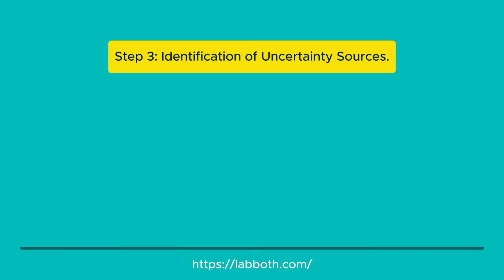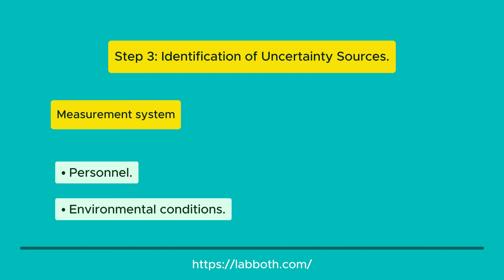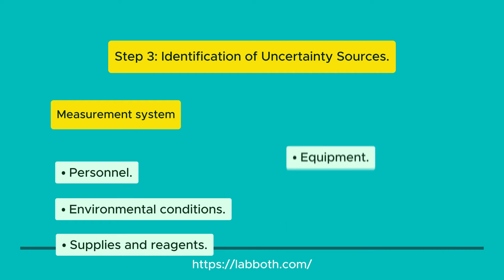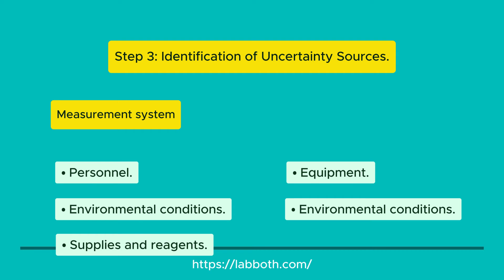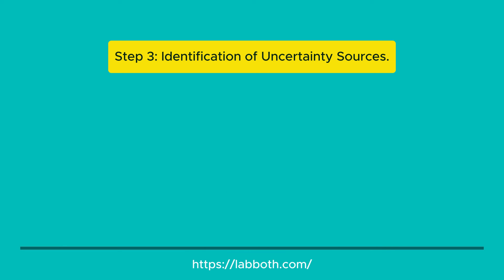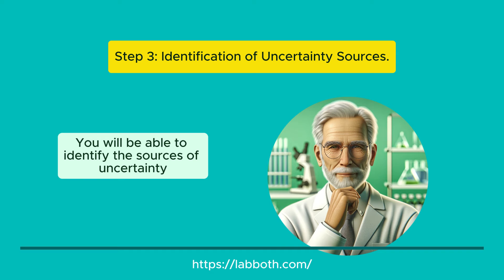The measurement system refers to all the elements involved in making a measurement. These elements include personnel, environmental conditions, supplies and reagents, and equipment. Make sure to review each element of the system through the Ishikawa diagram to identify the sources of uncertainty. During this process, it is advisable to involve personnel experienced in the method, as they know the possible intrinsic sources of uncertainty for each method.